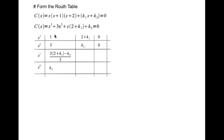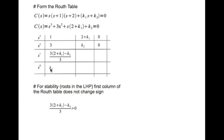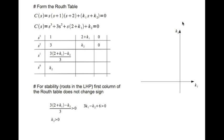For stability there should be no sign change in the first column. Since the first element is positive, everything must be positive. So the conditions are: 3k1 - k2 + 6 > 0, and k2 > 0. We need to find the region in the k1-k2 plane that satisfies both constraints.